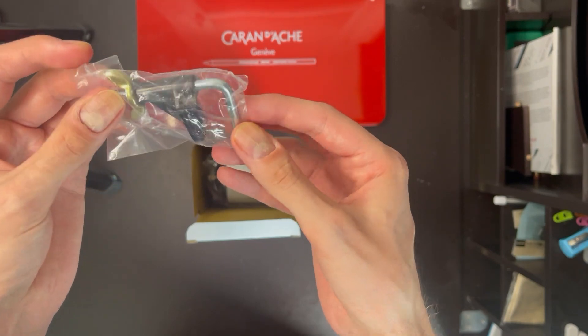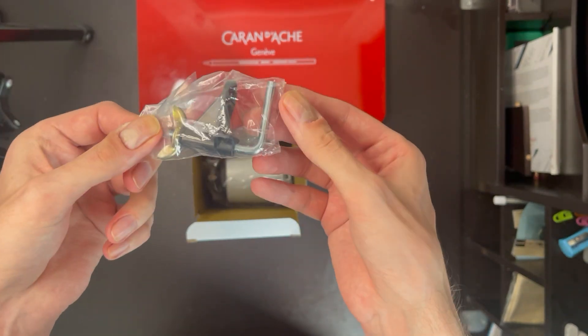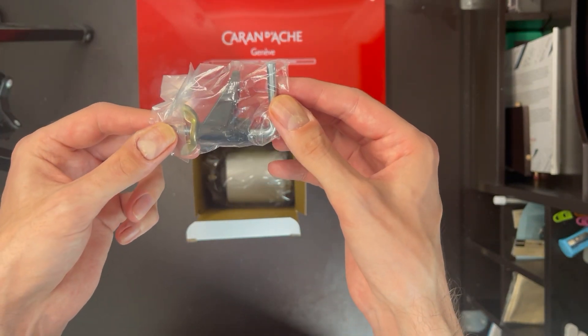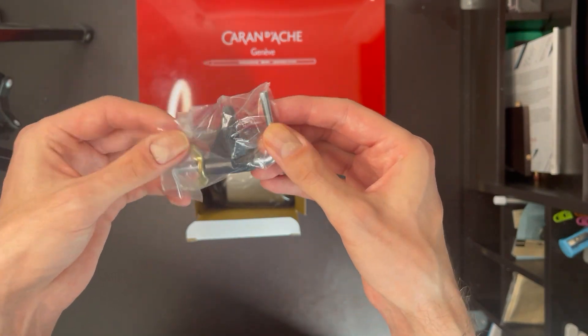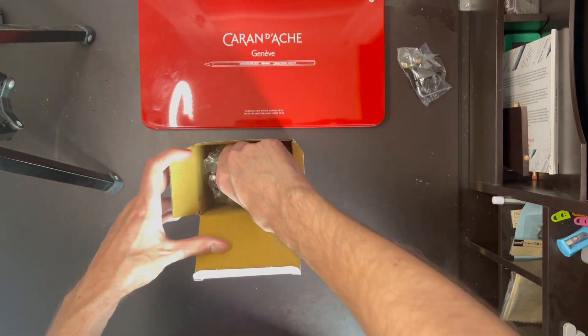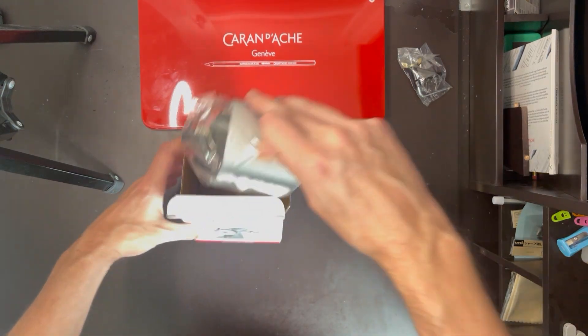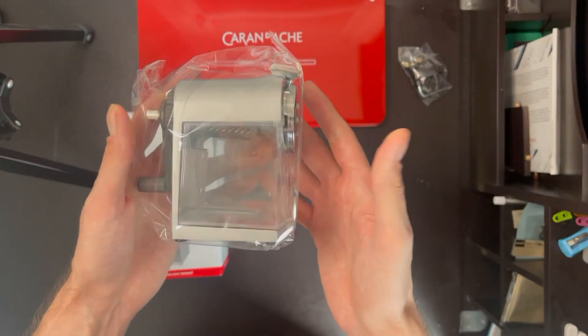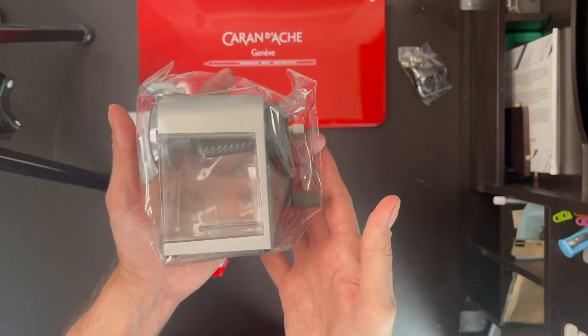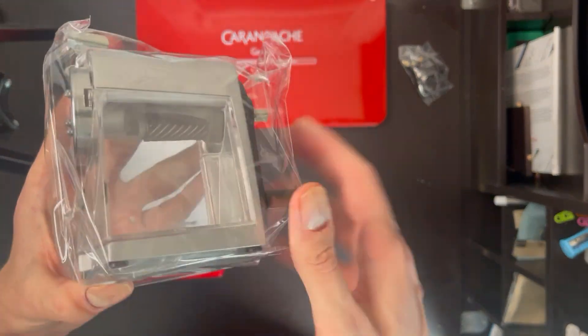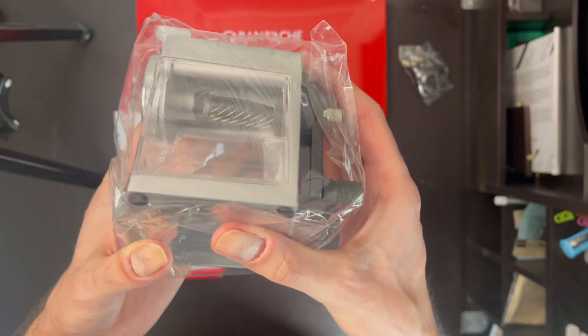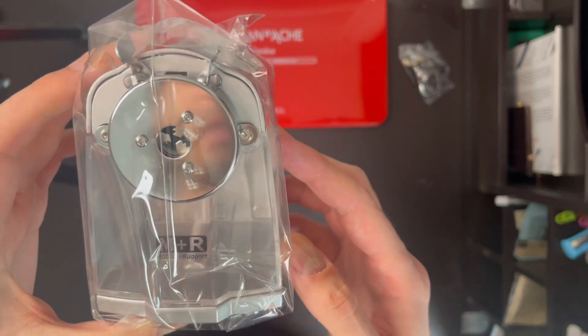So you get this latch if you want to attach it to the table to keep it sturdy. I won't be using that. And this is what it looks like. It is pretty heavy. You can see all the clippings and shavings inside.